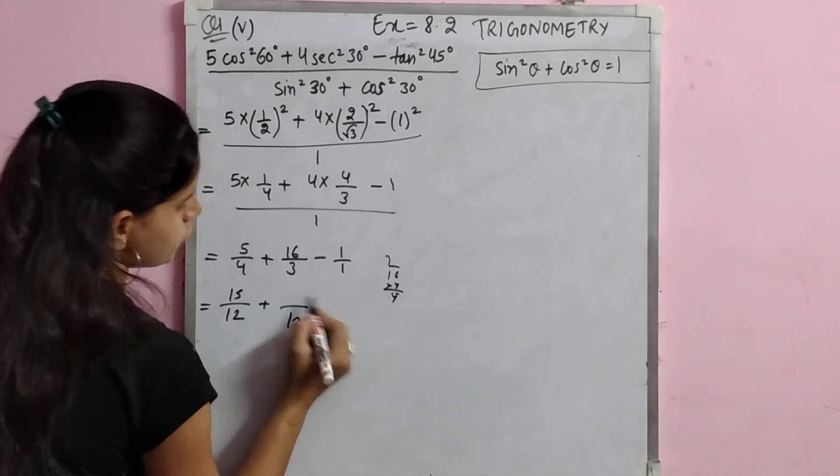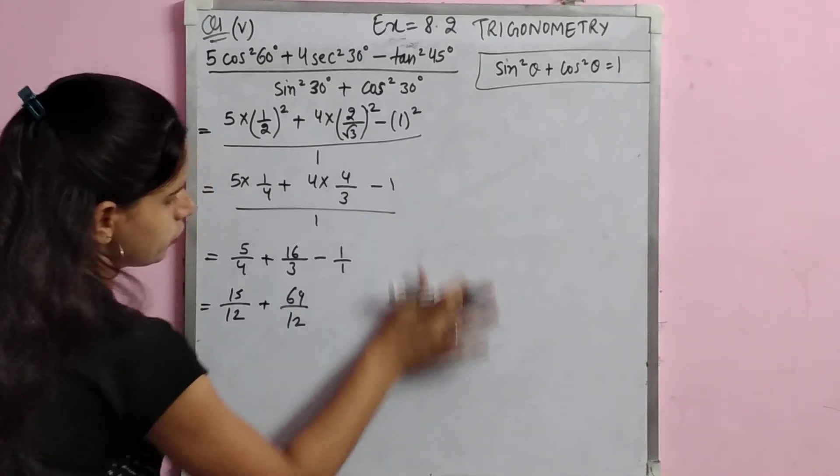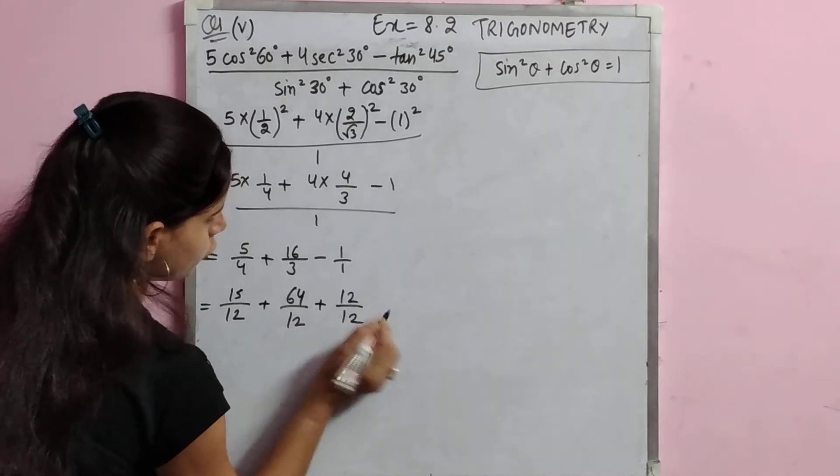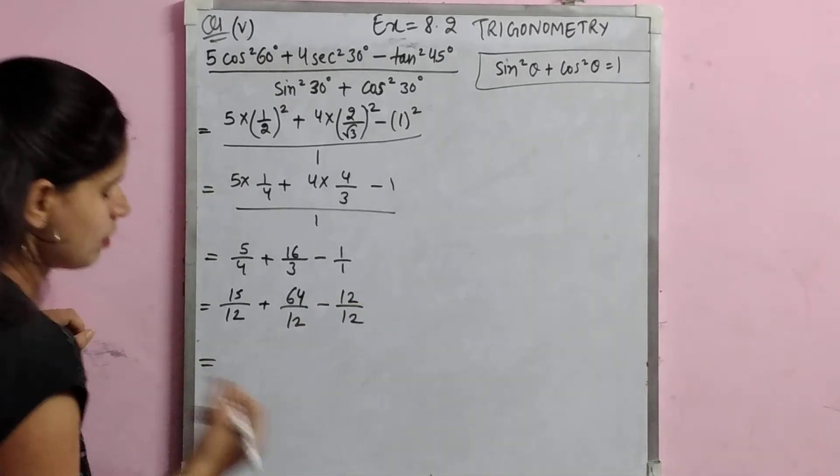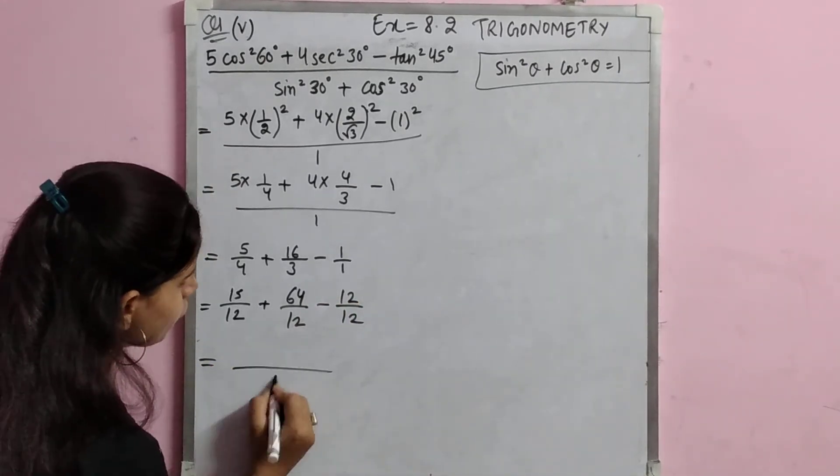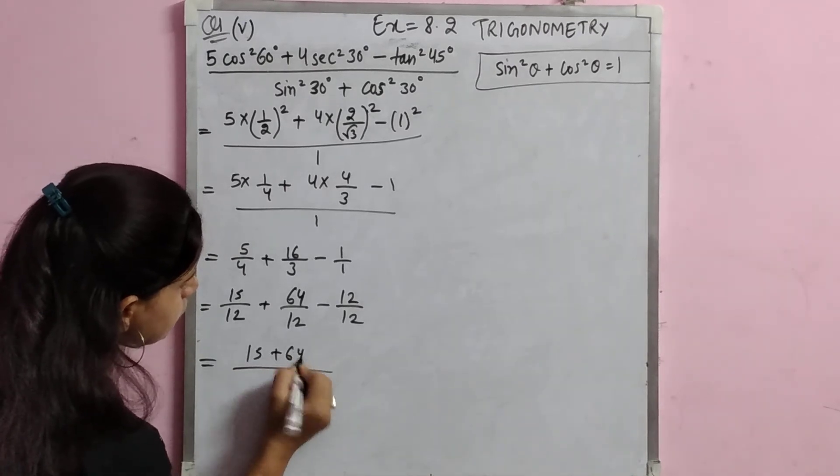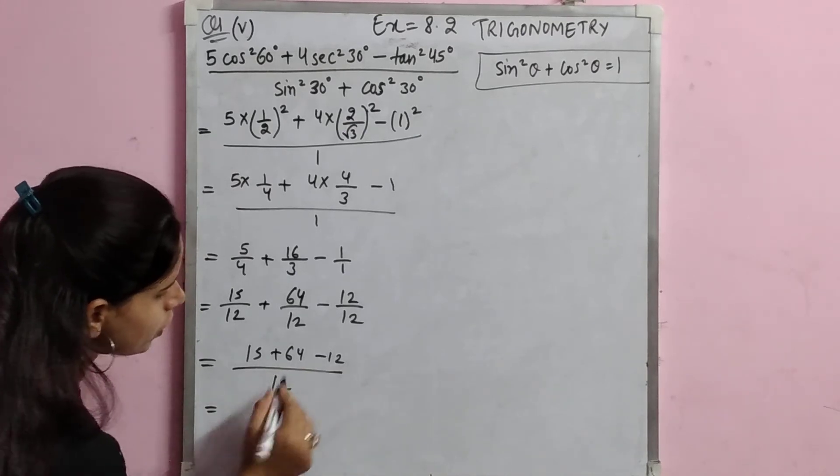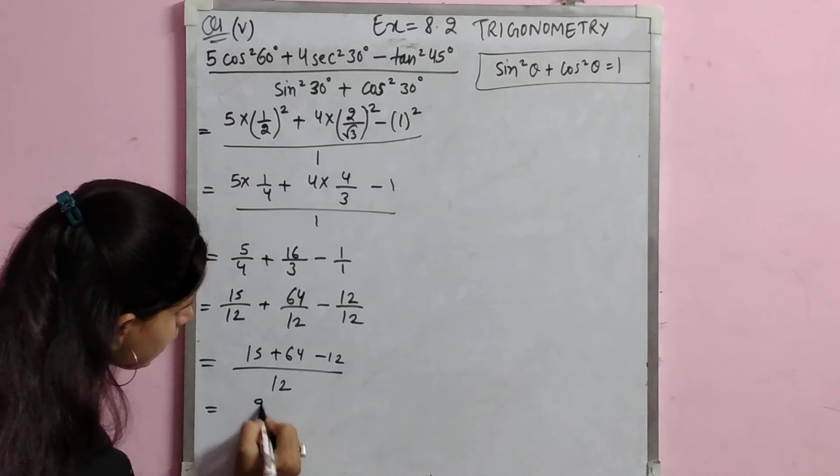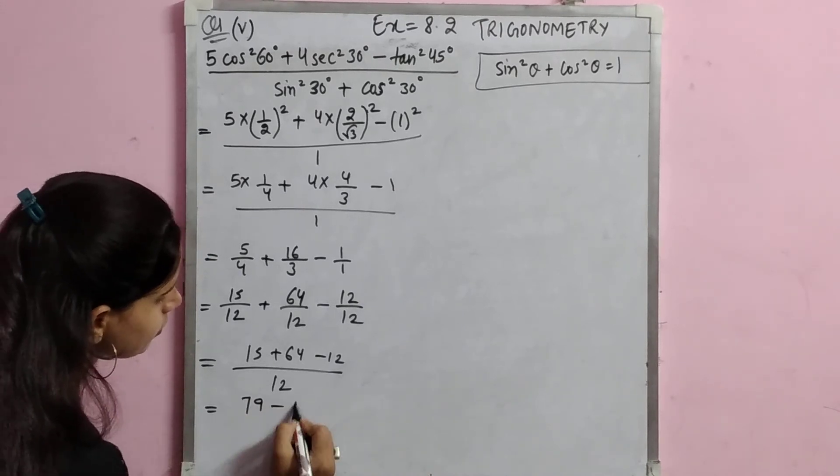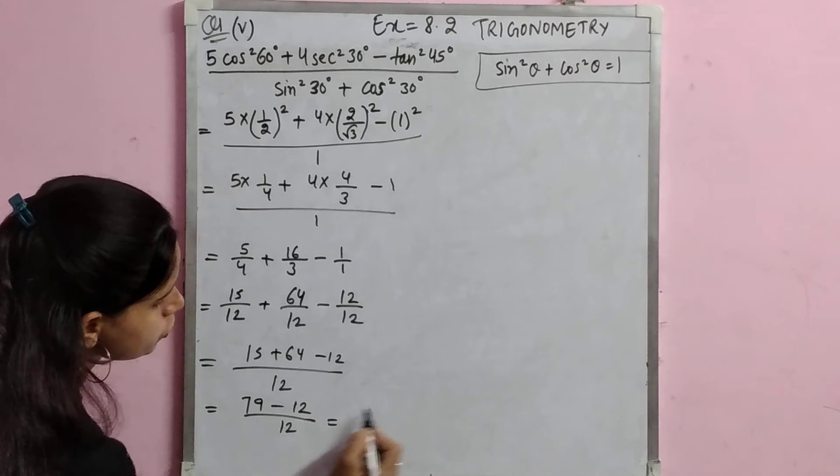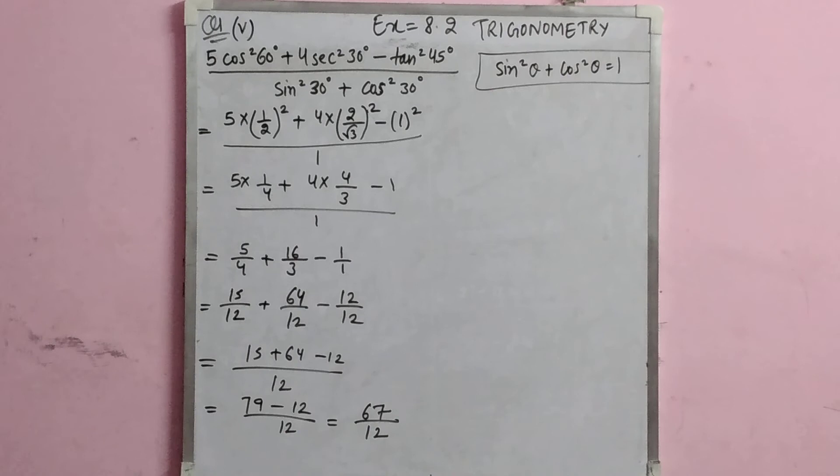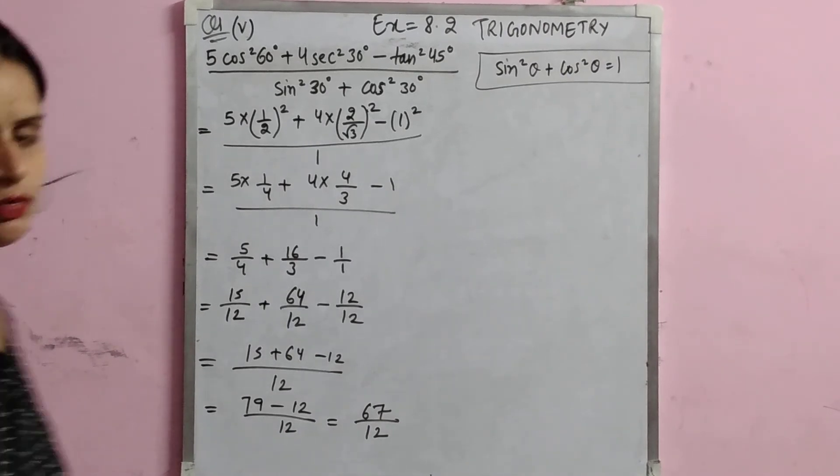For the third term, multiply by 12 to get 12 by 12. Now it's minus. So we solve: 15 plus 64 minus 12 all over 12. 15 plus 64 is 79, minus 12 gives 67. So 79 minus 12 upon 12 equals 67 by 12. The answer is 67 by 12.